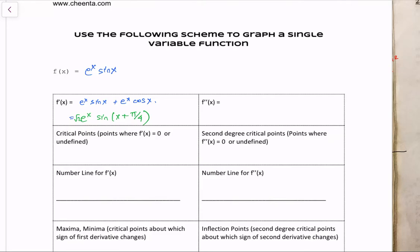Now let's find the critical points. Critical points are the x-values where the first derivative is either zero or undefined. In this particular situation, the first derivative cannot be undefined — that would require dividing by zero or a square root of a negative number, neither of which occurs here. We're dealing with an exponential function and a trigonometric function, both with the entire real number line as their domain.